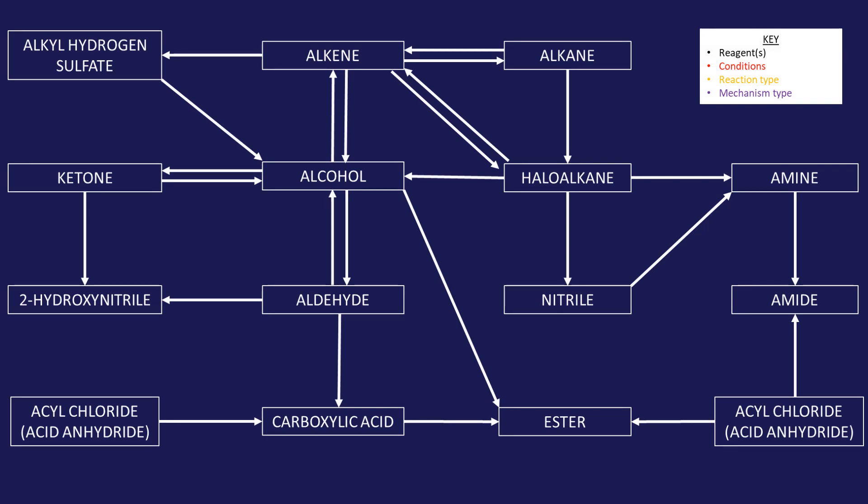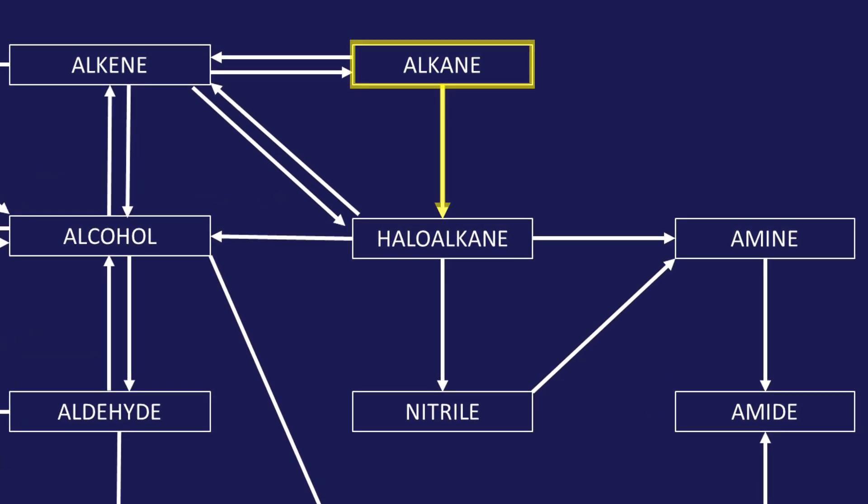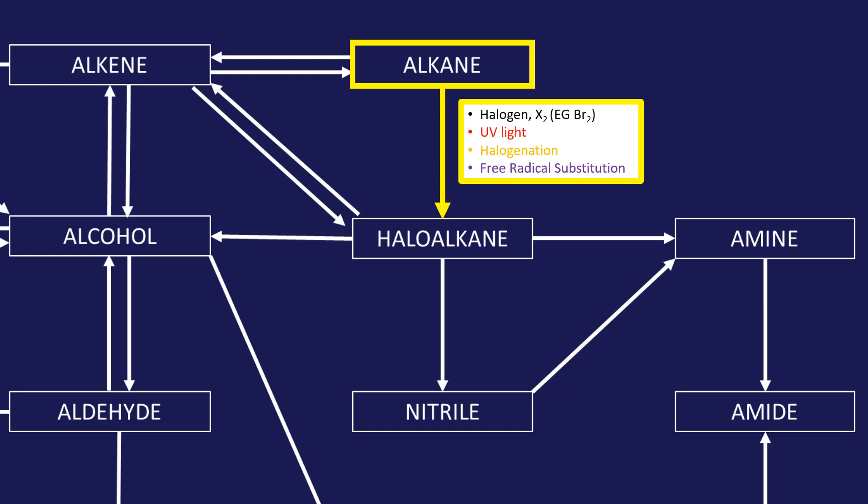So here's an overview of all of our organic reactions. So where does this sit within our scheme? So this is what I'd class as the very beginning, this is turning an alkane into a halo alkane using a halogen and UV light.